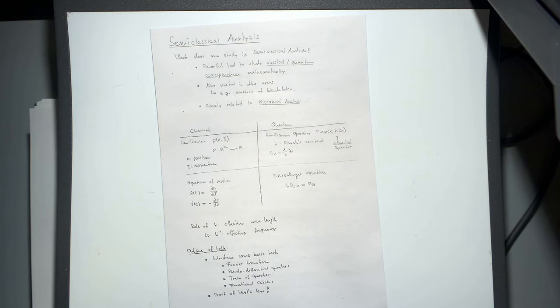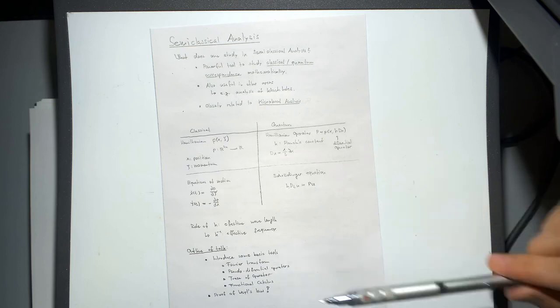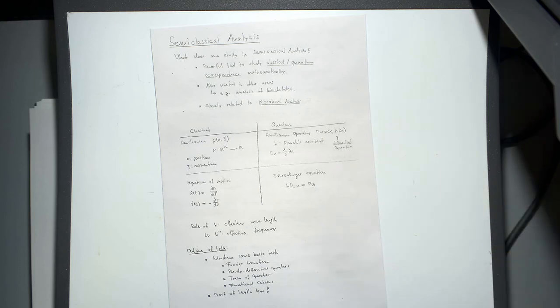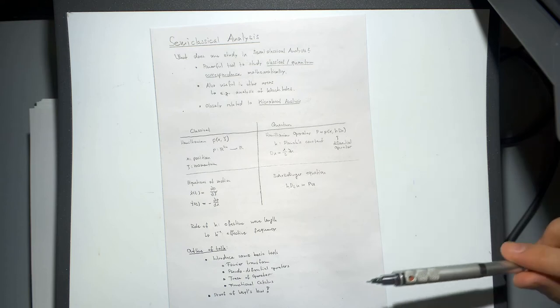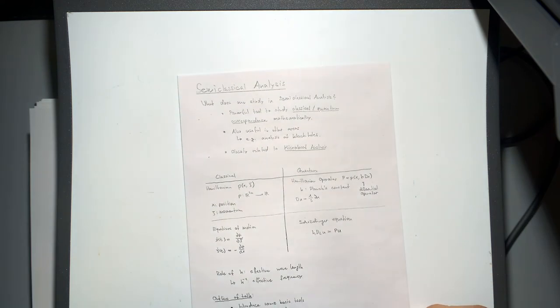Now we want to start with some mathematics — it's not too hard, don't worry. I want to talk about some very important tools in semi-classical analysis: first, the Fourier transform; second, pseudo-differential operators, which arise from the Fourier transform. I also want to talk about two more general concepts that will be used for the grand finale: the proof of Weyl's law, which is a formula for the asymptotic behavior of eigenfunctions of differential operators.